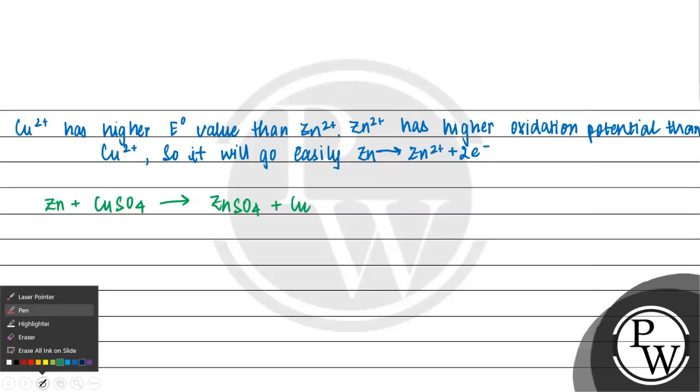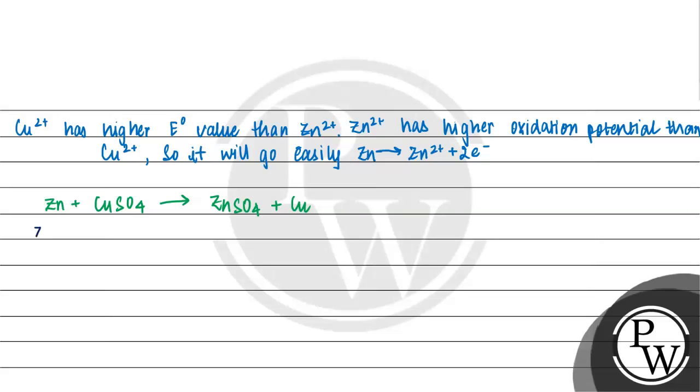Let us write the name of the elements. Zn plus CuSO4 gives ZnSO4 plus Cu. This is a displacement reaction.